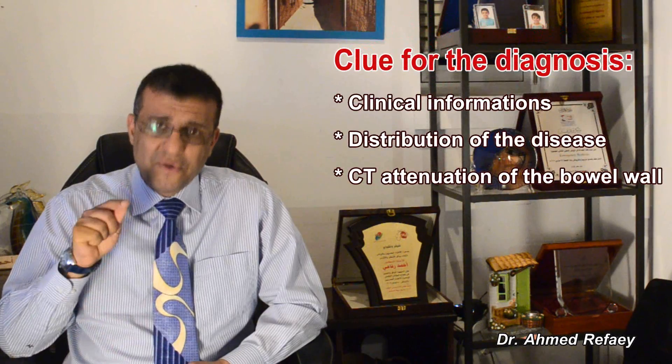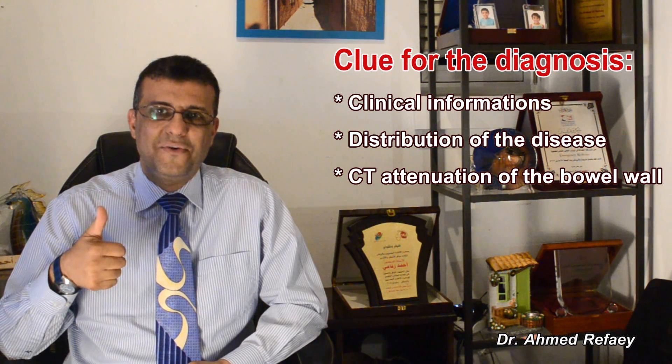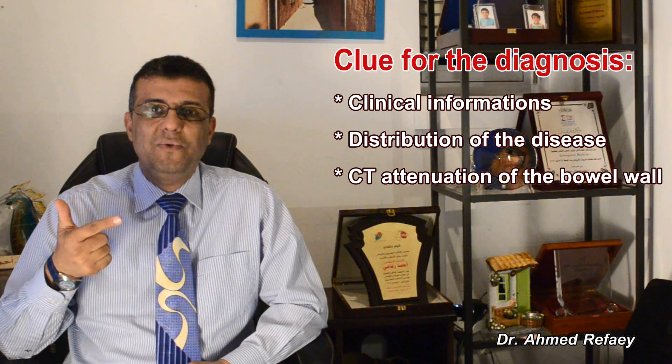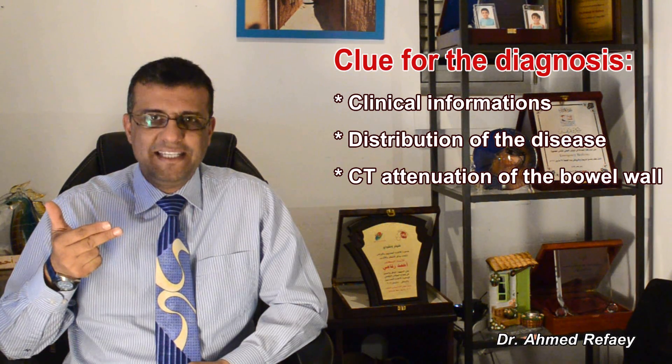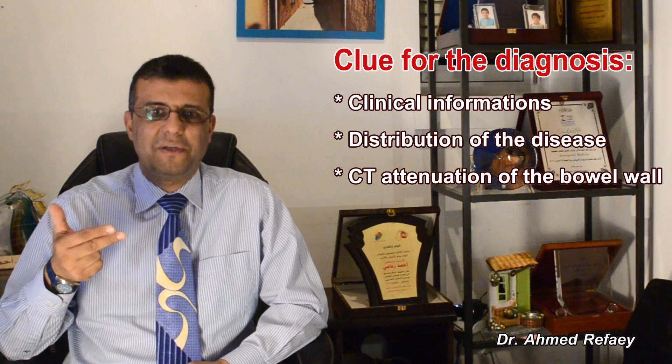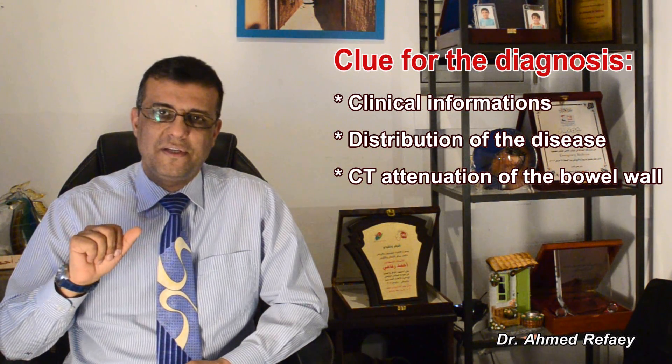How can we differentiate between all these causes of colitis on CT scan, especially when all of them present with thickening of the wall? The clue for diagnosis is through: number one, clinical information; number two, distribution of the disease; number three, CT attenuation of the bowel wall.